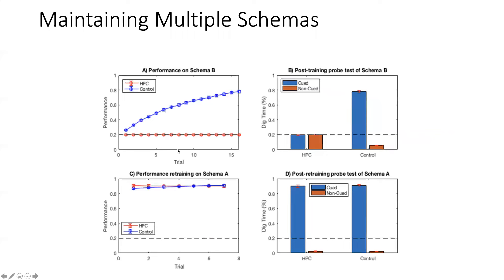She then ran the second schema and learned a new, different schema. Without a hippocampus, you would not be able to learn that new schema. But going back to the original schema, the model remembers it — it's been consolidated into the cortex in her model. This very nicely replicated those experimental results.